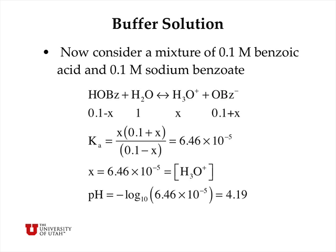The Ka expression is the hydronium ion concentration times the benzoate anion concentration divided by the benzoic acid concentration. We anticipate that x is small compared to 0.1 moles per liter, so adding or subtracting x from 0.1 gives essentially 0.1. The 0.1's cancel in the numerator and denominator, and we're left with x equal to 6.46 times 10 to the minus 5. Since x equals the hydronium ion concentration, we take the negative base-10 logarithm and get a pH of 4.19.